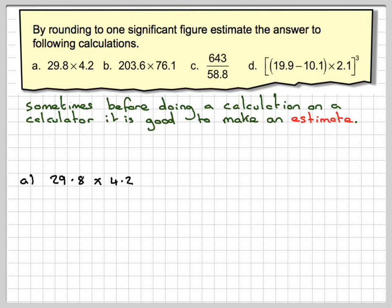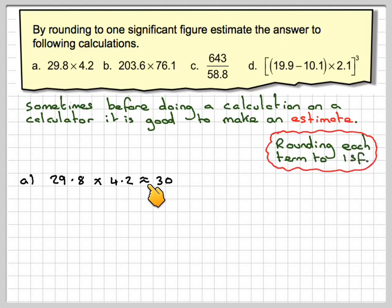So taking the first case, you've got 29.8 times 4.2. Now 29.8 to one significant figure, well that 9 will make that a 3, so that becomes approximately equal to 30. Now 4.2 to one significant figure will become 4, and then we do 3 times 4, which is 12, and then we need to add in an extra 0 for the 30.